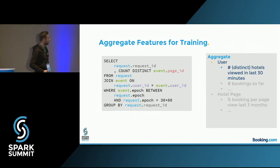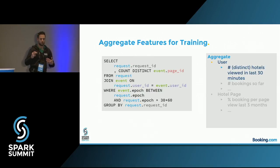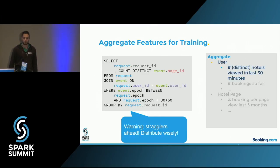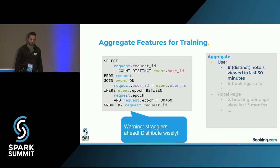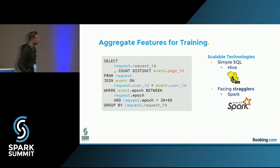Here's a query for how you could do it. You join events on user ID, group by request ID, and add a WHERE clause for your time window. If you do this at the hotel level, you might encounter stragglers, and you'll need to use your best Spark skills to make it all happen. That's a reality a lot of people are in.